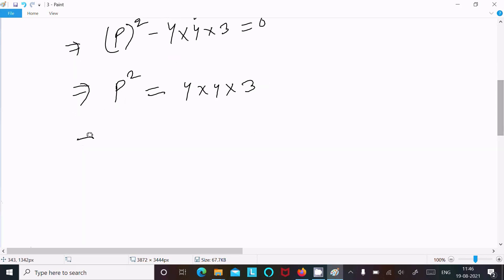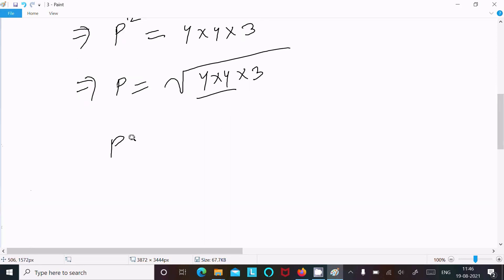Removing the square root, p = ±√(4 × 4 × 3). So 4 comes out, giving us 4√3. This has plus and minus, so one is positive and one is negative.